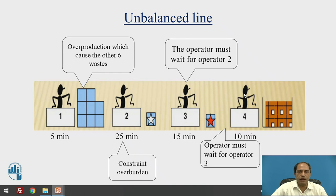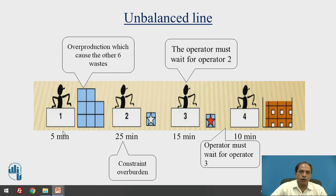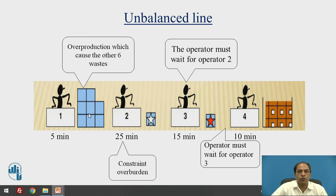In contrast, an unbalanced line presents different problems. For example, if workstation one takes 5 minutes, workstation two takes 25 minutes, workstation three takes 15 minutes, and workstation four takes 10 minutes, then workstation two is the constraint that decides the entire output. Since workstation one produces at 5 minutes, a heap of inventory piles up waiting at workstation two. The overproduction at workstation one causes other types of waste, increasing inventory. WIP will definitely pile up before the constraint machine.